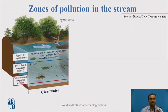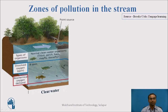Let us discuss the various zones of pollution in the stream. The first zone is the clear water zone, where the water is not too much polluted. Here you can see a pipe adding wastewater into the stream, and in this zone fish and aquatic life are present.